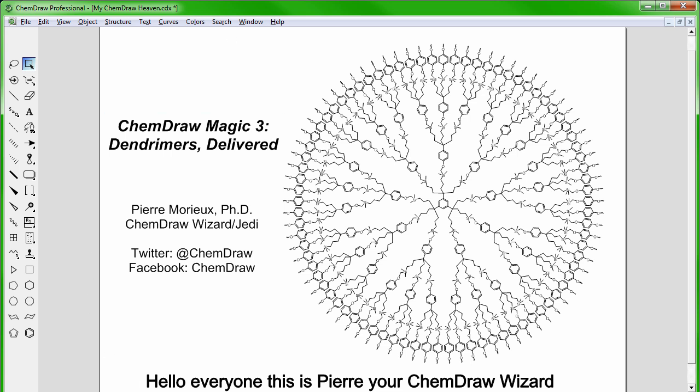Hello everyone, this is Pierre your ChemDraw Wizard, and in this video we're going to see how to draw this nice little structure on the right, under 10 minutes, using multiple tricks available in ChemDraw. Tricks I'm sure you will find helpful, even if your research isn't about dendrimers.